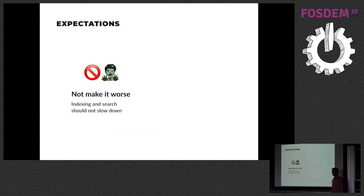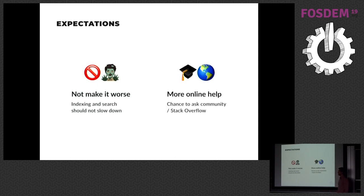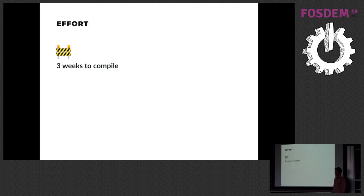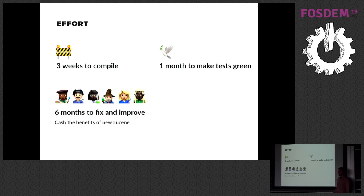The expectations were rather low — let's just make it not any worse than it was, and let's be more up-to-date so we can get help online, for example on Stack Overflow. Effort-wise, it took two developers three weeks just to make the code compile with the new Lucene, then another month to make unit and functional tests green, and then the whole team jumped in and we spent six months. We took the momentum and decided to use as much as we could from Lucene to make search and indexing in JIRA better.